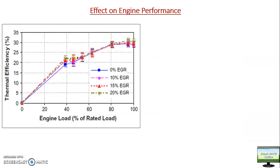First of all, we will see the effect of different percentages of EGR on diesel engine performance. In this experiment, a diesel engine was taken and different percentages of EGR — 0%, 10%, 15%, and 20% — have been mixed with fresh air and used inside the engine. The effect on different parameters of engine performance as well as emissions coming out of the exhaust has been measured.